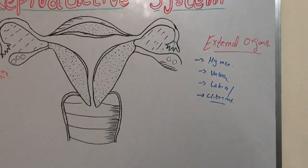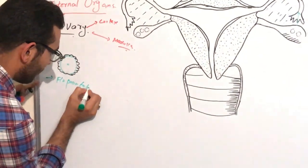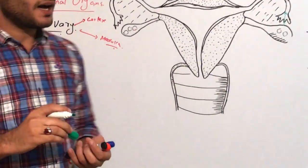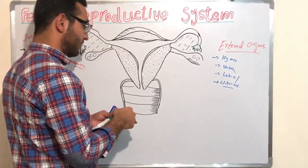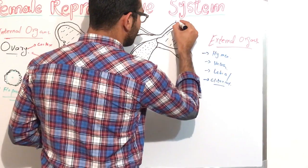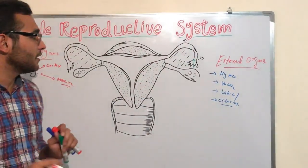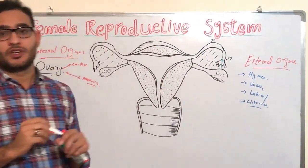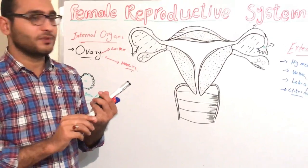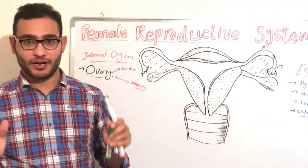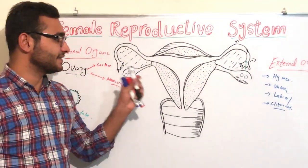The fallopian tube consists of three parts. The first part is known as the infundibulum. The second part, which is the broad and wide part, is known as the ampulla. The third part, which is the narrow part, is known as the isthmus.